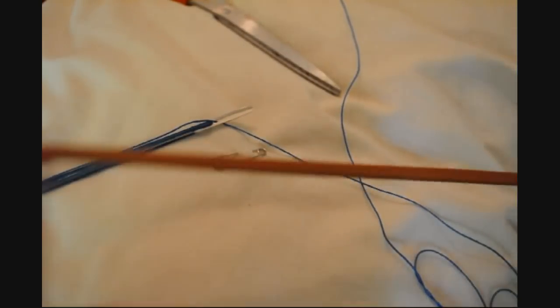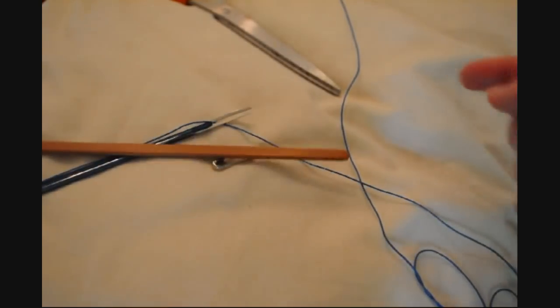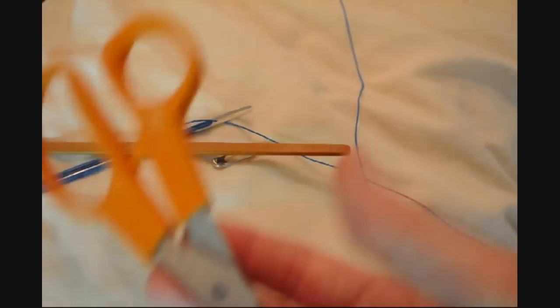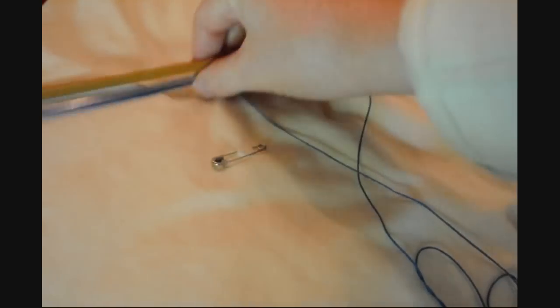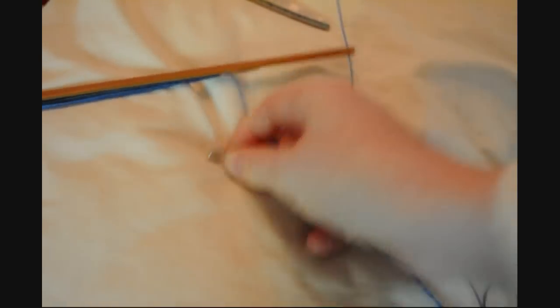Then you need something called a mesh stick. As you can see, it's just basically a glorified popsicle stick. It's a certain width, and scissors, and a pillow, and one little safety pin to hold it down.